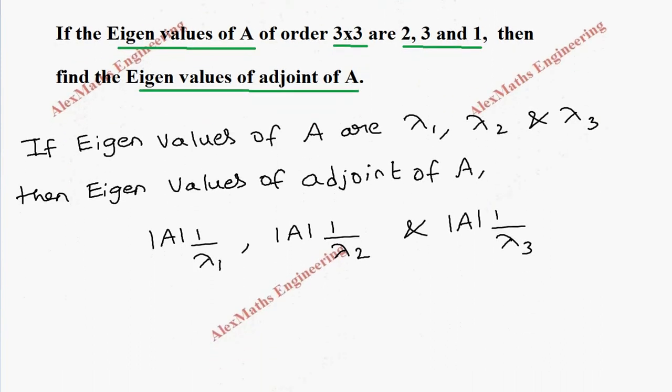Now again, using another property, we are going to find the determinant value of the matrix A, which is nothing but the product of the eigenvalues lambda 1, lambda 2 and lambda 3. Therefore, determinant A is 2 into 3 into 1. So, determinant A is 6.